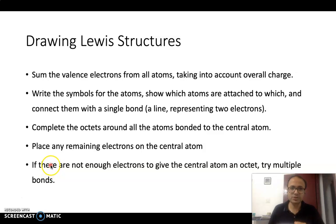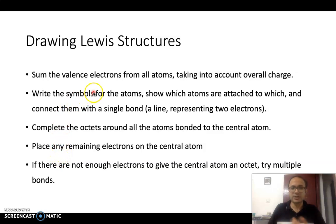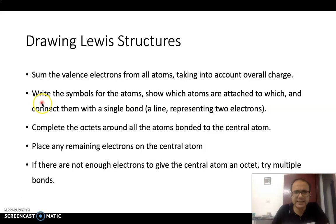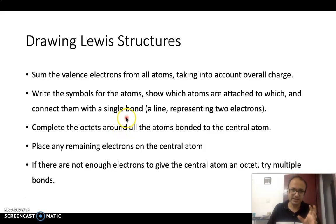Now let's understand the rules for drawing Lewis structures. First, count the total number of valence electrons from all atoms, taking into account the overall charge — adding electrons for negative charge and subtracting for positive charge. Second, write the symbols of the atoms, identify which atoms are attached to which, and connect them using single bonds, so you need a rough structural idea of the molecule.